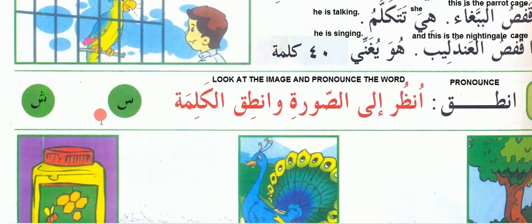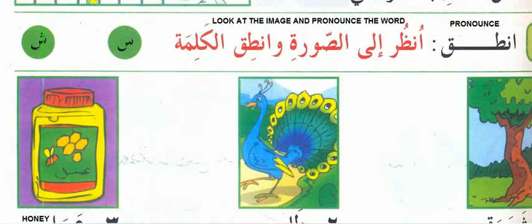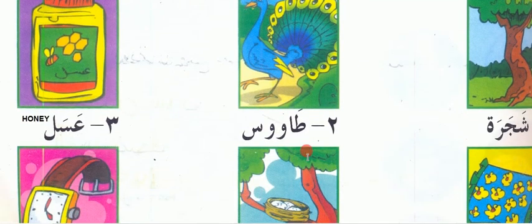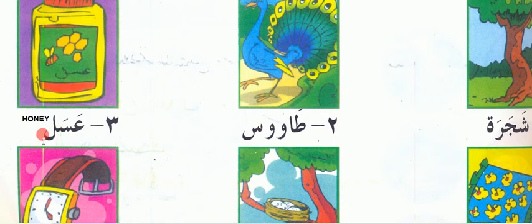Note the difference between 'seen' and 'sheen' — we discussed these before. For 'taus' (peacock), notice there is no shadda on the waw. If any letter has a shadda, we pronounce it twice. Here there is no shadda, so we write two vowels. 'Taus asala' — peacock honey. 'Shajara' means tree.